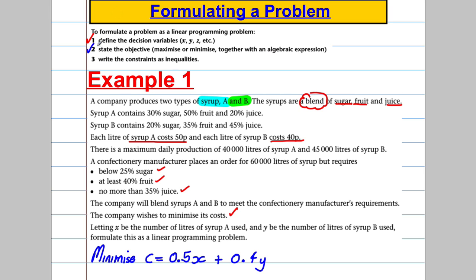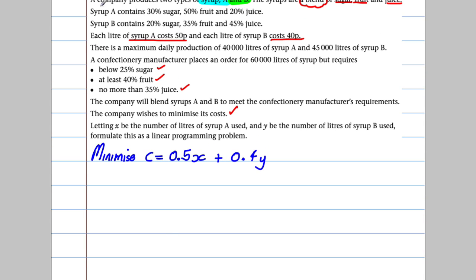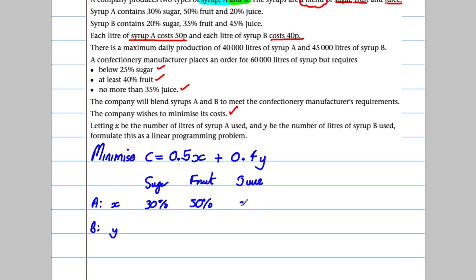Now we need to write our constraints. I'm going to draw a table of the information to make it easier. We have syrup A (x litres) and syrup B (y litres). Syrup A contains 30% sugar, 50% fruit, and 20% juice. Syrup B contains 20% sugar, 35% fruit, and 45% juice. Costs are 0.5 and 0.4 respectively.